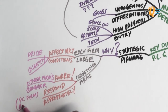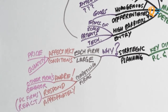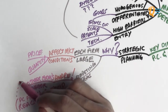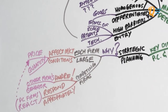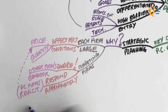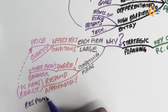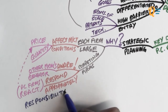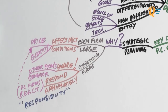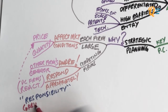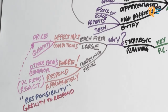Perfectly competitive firms react — they don't respond, they react. PC firms react to things like market price; when there's a change in the market price, PC firms will change their quantity produced. A good way to remember this is that there needs to be responsibility in the duopoly market, and responsibility can be defined as the ability to respond — to respond to what the other firm is doing.